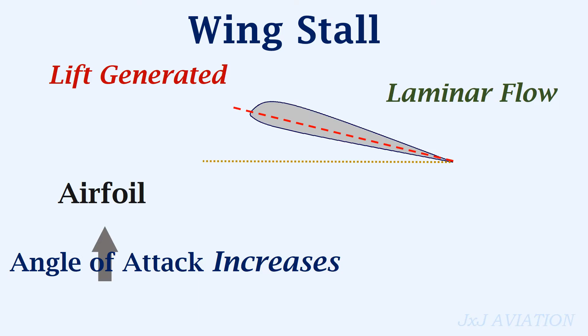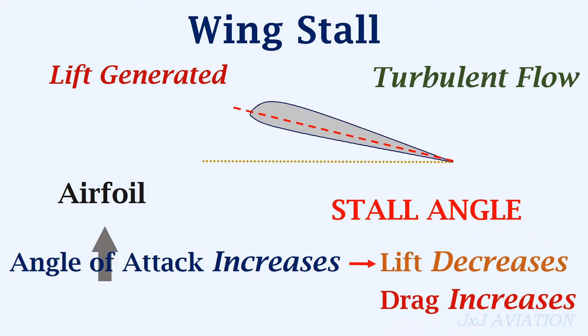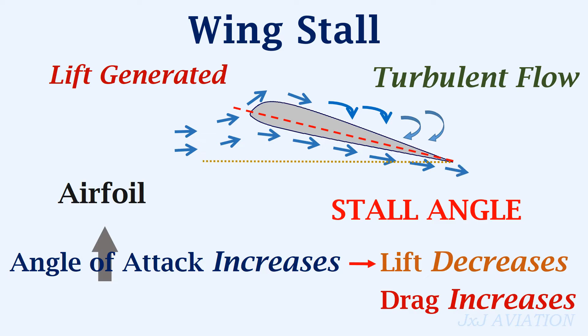If the angle of attack is increased further, it reaches something called the stall angle. At this angle, the flow over the top section of the airfoil changes from a laminar flow to a turbulent flow. This transition will cause a decrease in the lift and an increase in the drag force. The flow separation occurs because the flow does not have enough energy to reach the trailing edge of the airfoil, and thus it becomes a turbulent flow.